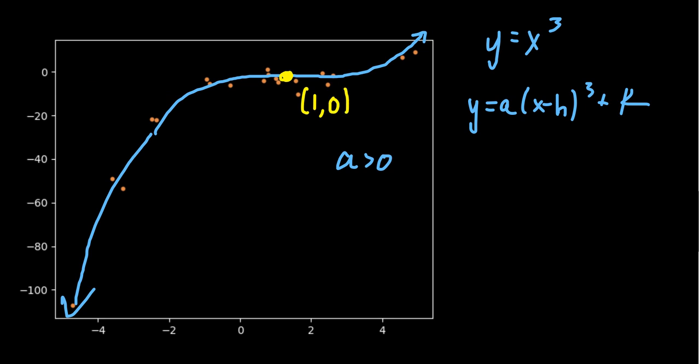And so with regard to my function, then I'm going to get y equals a times x minus one cubed plus zero. That's great. You don't even need the plus zero there. So we still have to determine this coefficient a.